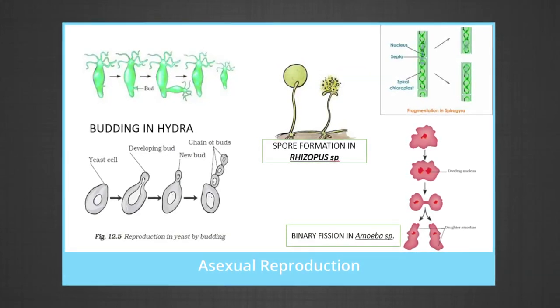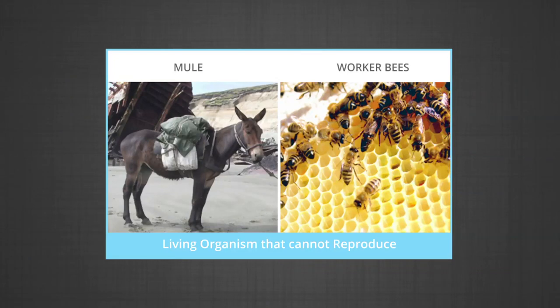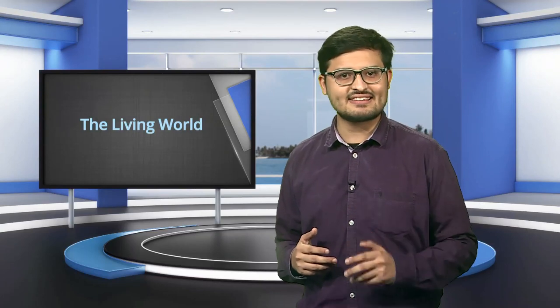In planaria, it regenerates — it is one of the organisms which shows true regeneration. Besides all this, there are many organisms which do not reproduce, like mules, sterile worker bees, and infertile couples. Thus, reproduction can also not be an inclusive defining characteristic of living organisms. And of course, no non-living organism is capable of reproduction.